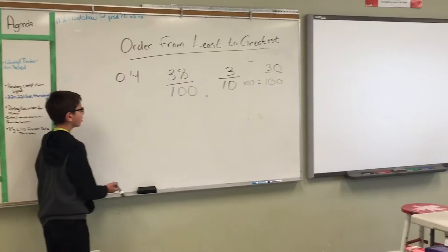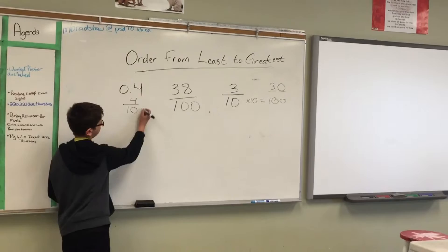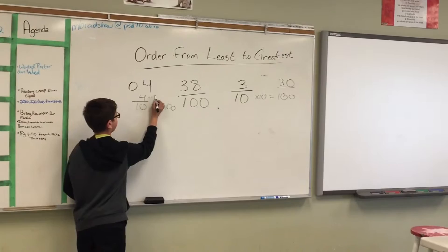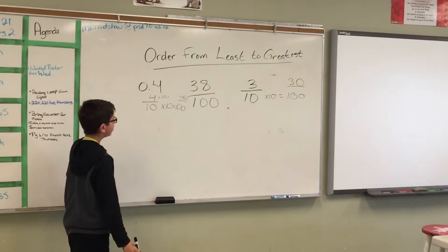And 0.4 is the same as 4 over 10. So we'll do the same. 10 times 10 equals 100, and 4 times 10 equals 40. So that's 40 over 100.